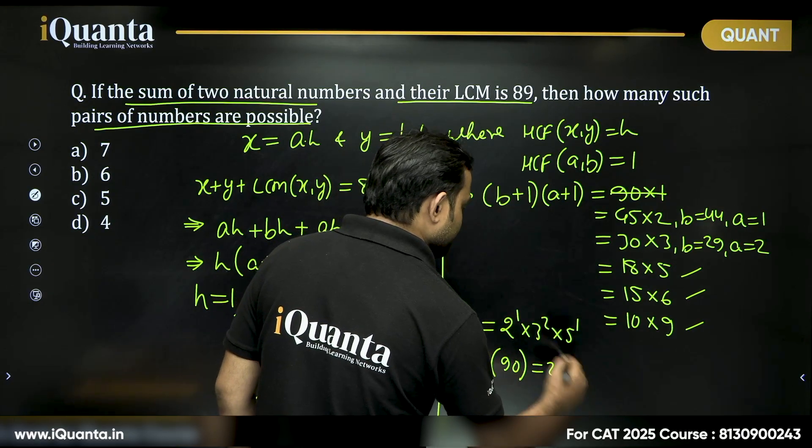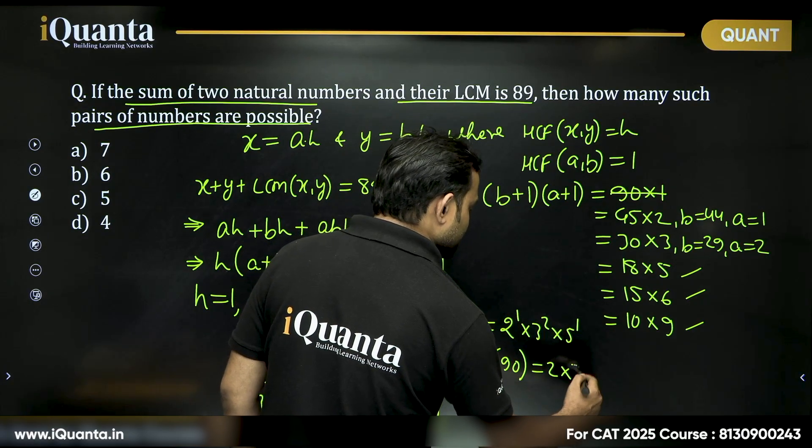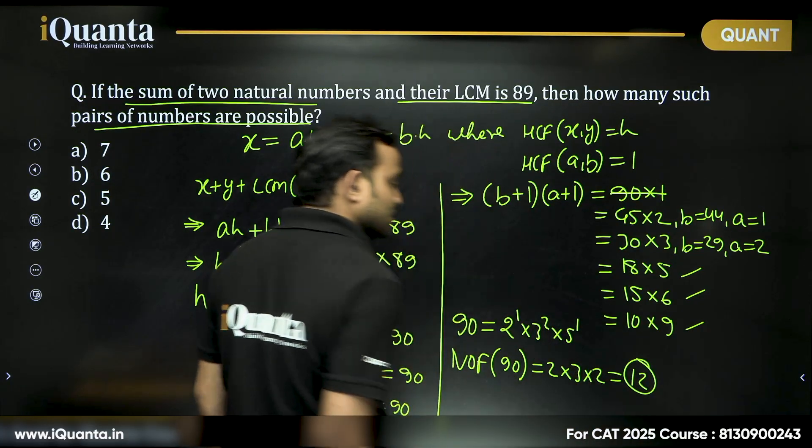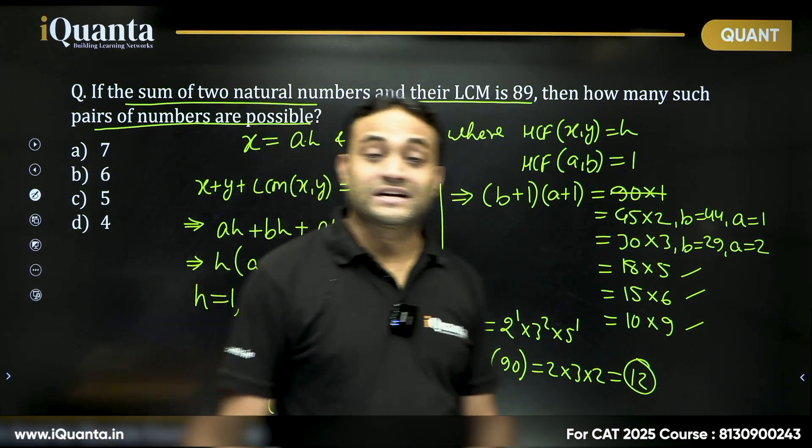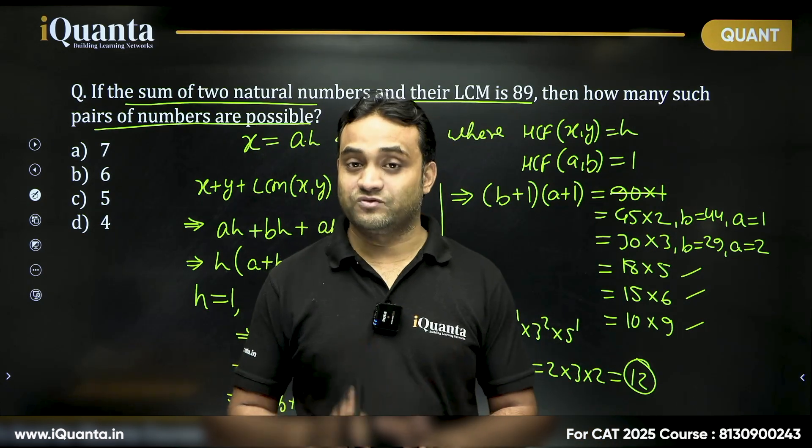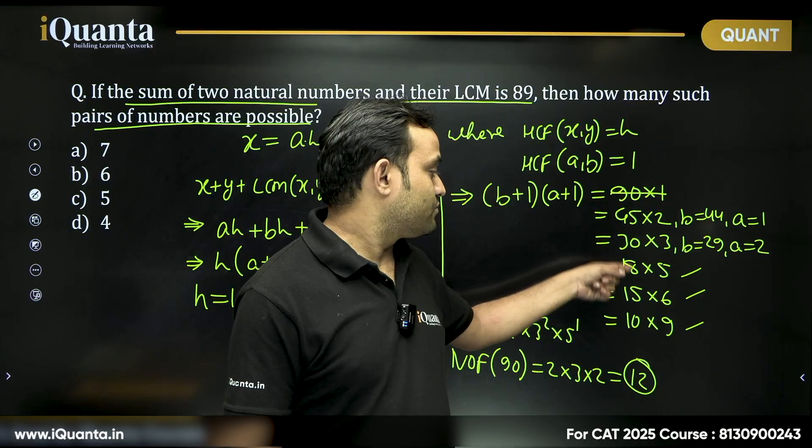Number of factors of 90 will be 2 plus 1, then 2 plus 1 which is 3, then 1 plus 1 which is 2, which equals 12. 90 can be written as product of 2 of its factors in 12 by 2, which is 6 ways: 1, 2, 3, 4, 5, 6.